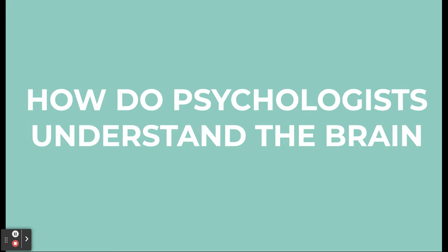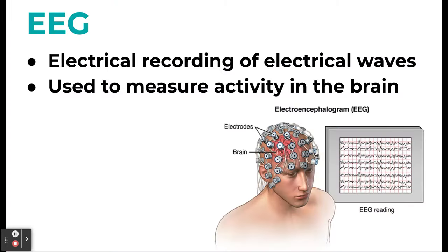Before going deeper into the brain, we looked at the tools used to understand it. We have the EEG, which is an electrical recording of brain waves used to measure brain activity. We also have the CT scan, which takes x-ray photos of the brain — similar to getting an x-ray of your ankle — and is typically used to reveal damage.